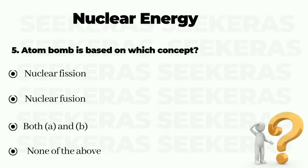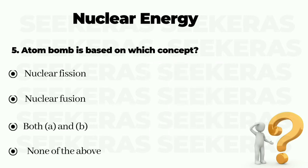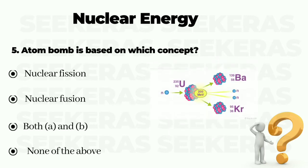Question number 5. Atom bomb is based on which concept? Option A nuclear fission, option B nuclear fusion, option C both A and B, and option D none of the above. The correct answer is option A, nuclear fission.